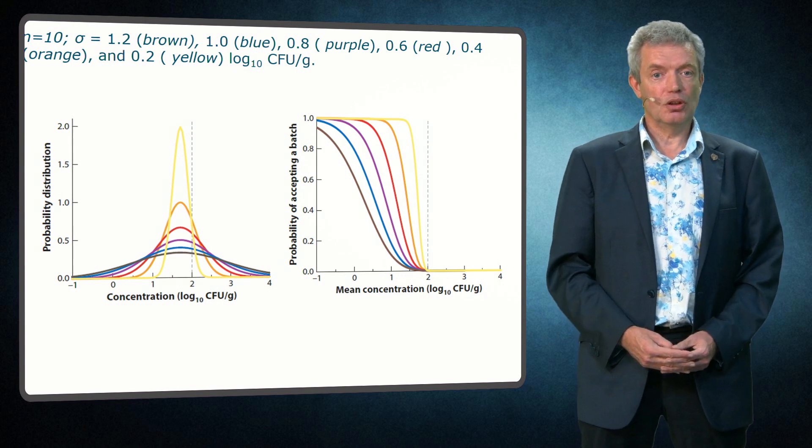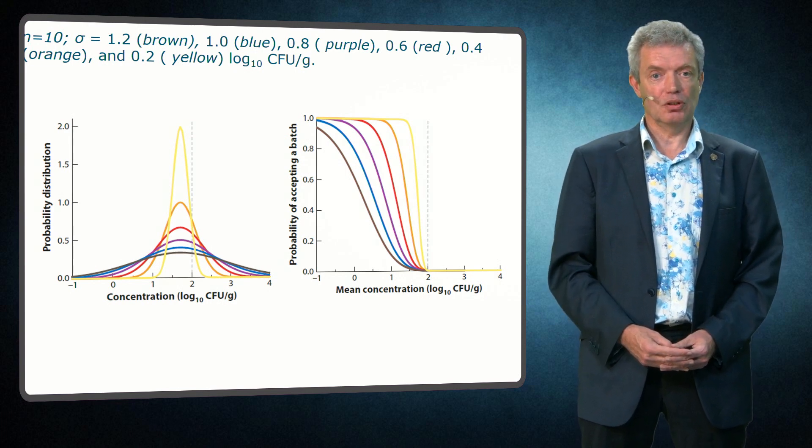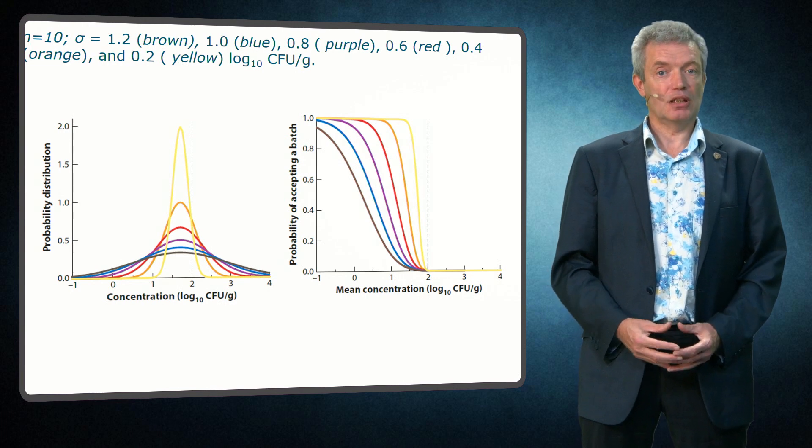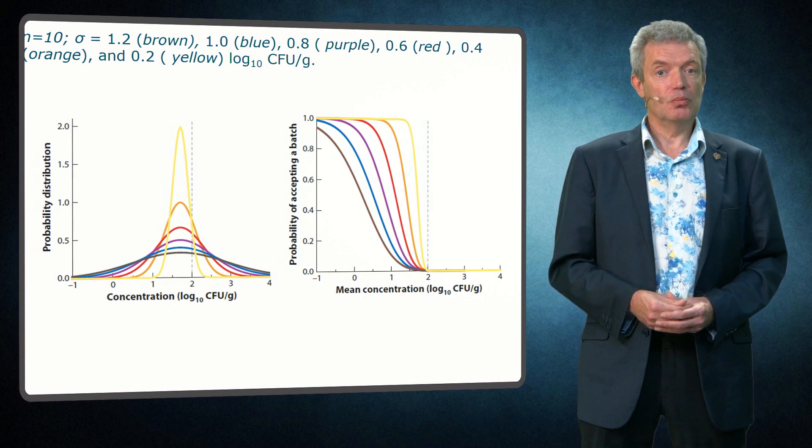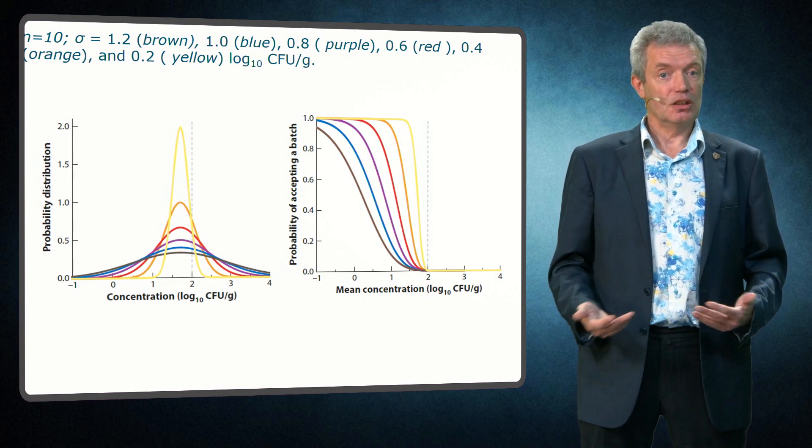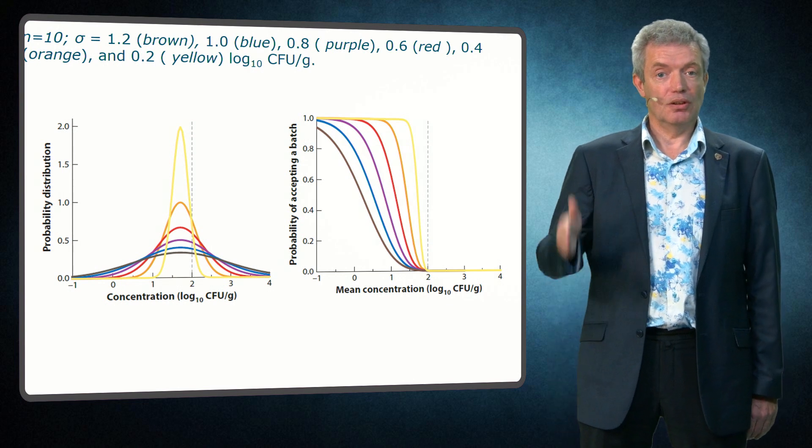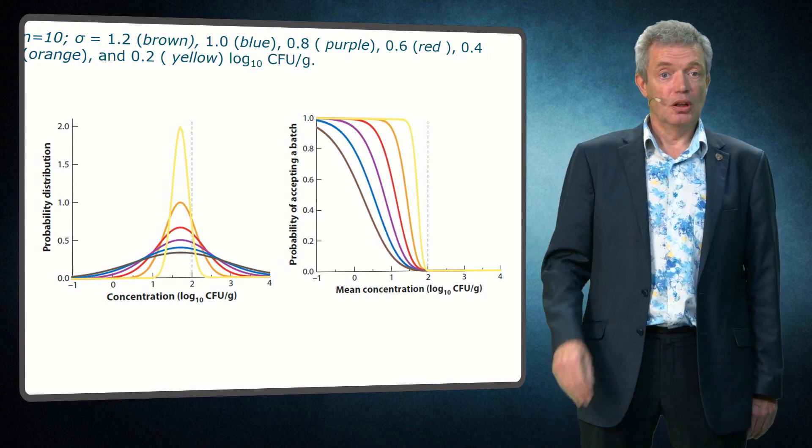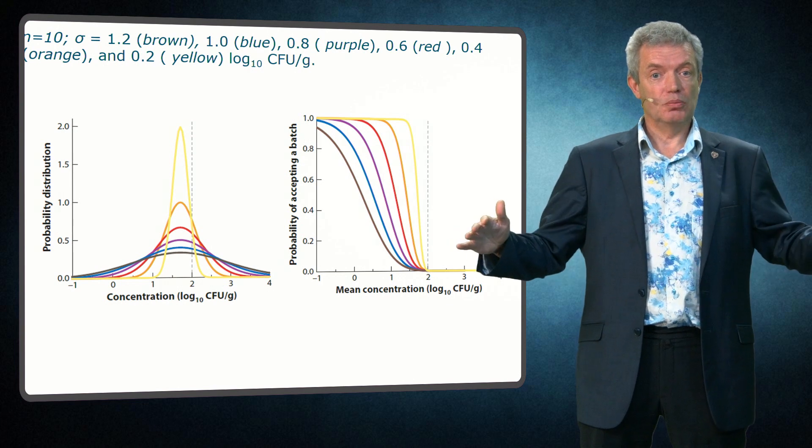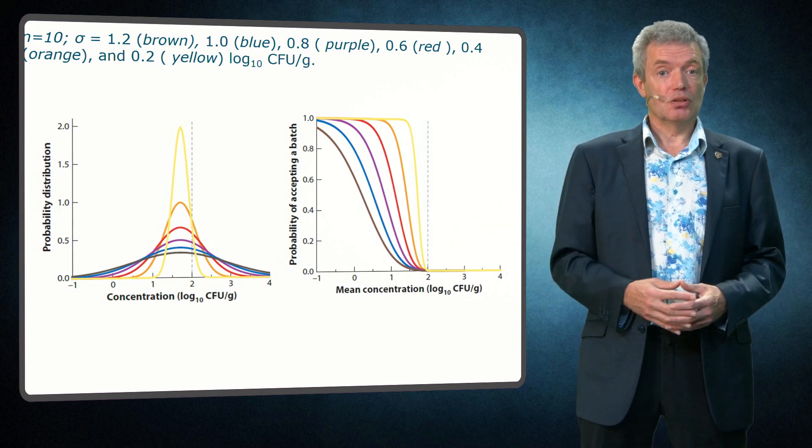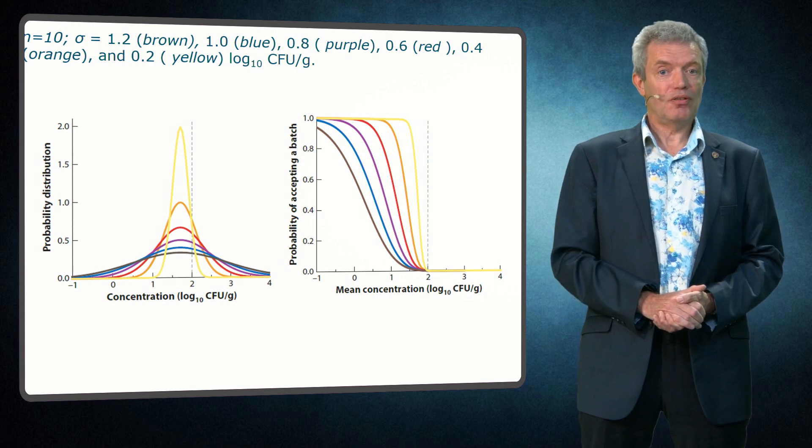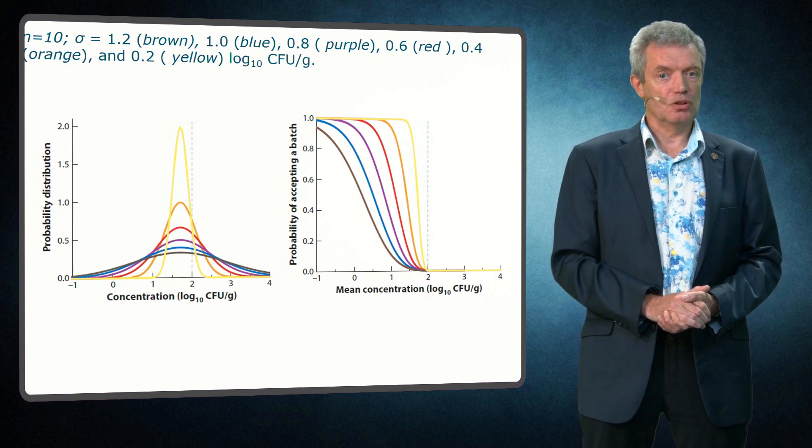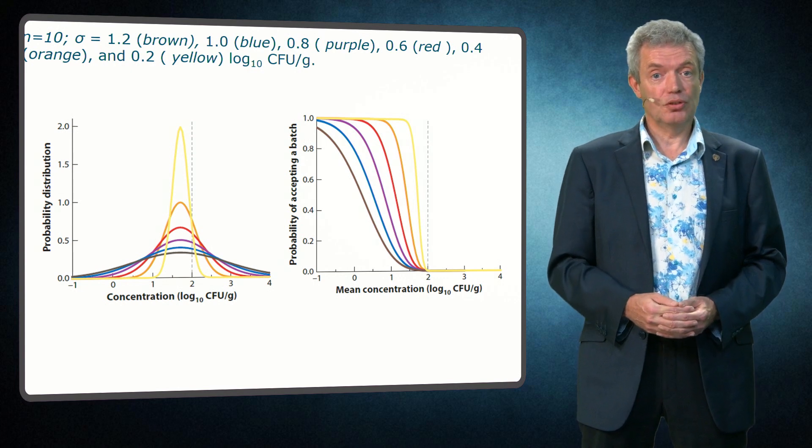We can now determine the OC curve for various distributions of microorganisms. If we have for example batches with an equal mean log value but different spread, we can determine the effect on the OC curve. The yellow curve for a process that is very well under control results in a very steep OC curve. Conversely the brown curve that has a very wide distribution, we reject batches already at a very much lower mean log concentration. You have a lower probability to accept such a batch, which is a good thing, since it is less under control.